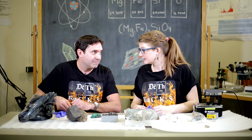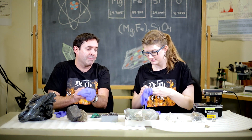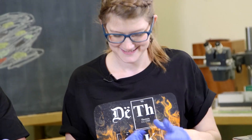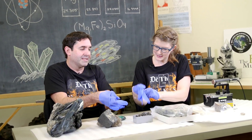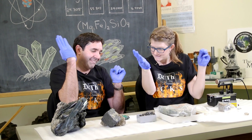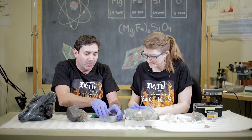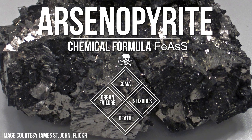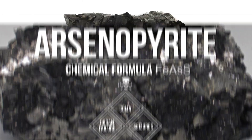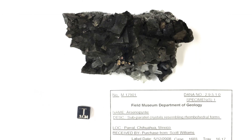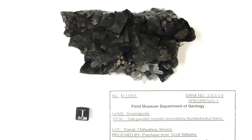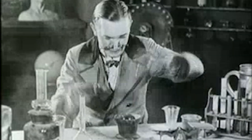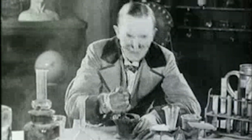This next one, Emily, we need to wear gloves. So this one looks like pyrite, but it's called arsenopyrite. And it's called that because it contains arsenic. Arsenic can cause organ failure, coma, seizures, hair loss, and potentially death. This was a very popular poison that people used to use. It's colorless, odorless, and it's very deadly.